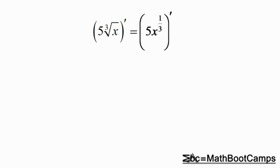So I bring down the 1/3 and then I subtract 1 off the 1/3. So I have 5 times 1/3 x to the 1/3 minus 1. This is the only step that's actually calculus.